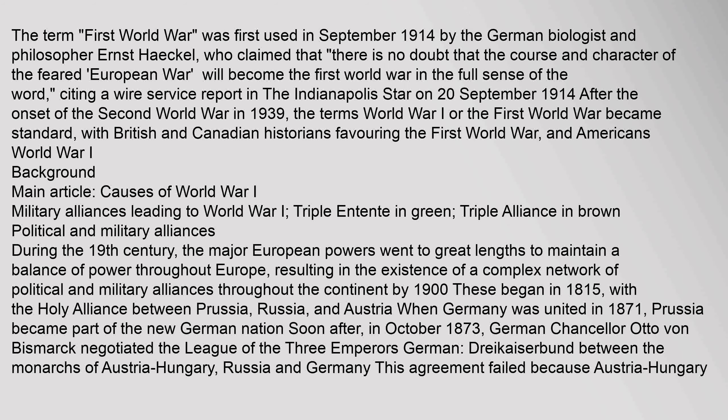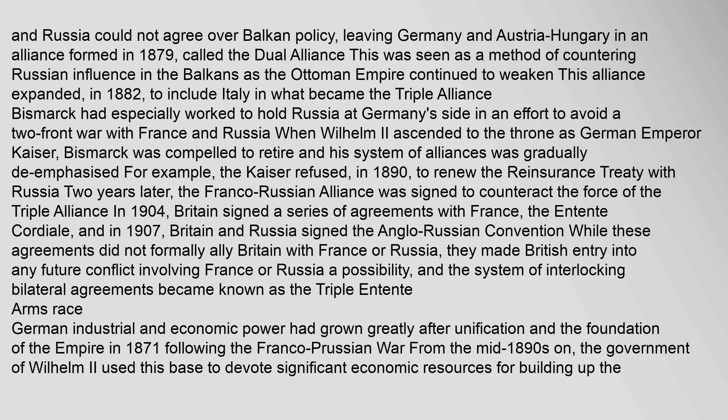The term First World War was first used in September 1914 by the German biologist and philosopher Ernst Haeckel. Russia and Germany could not agree over Balkan policy, leaving Germany and Austria-Hungary in an alliance formed in 1879, called the Dual Alliance. This was seen as a method of countering Russian influence in the Balkans. As the Ottoman Empire continued to weaken, this alliance expanded in 1882 to include Italy in what became the Triple Alliance.